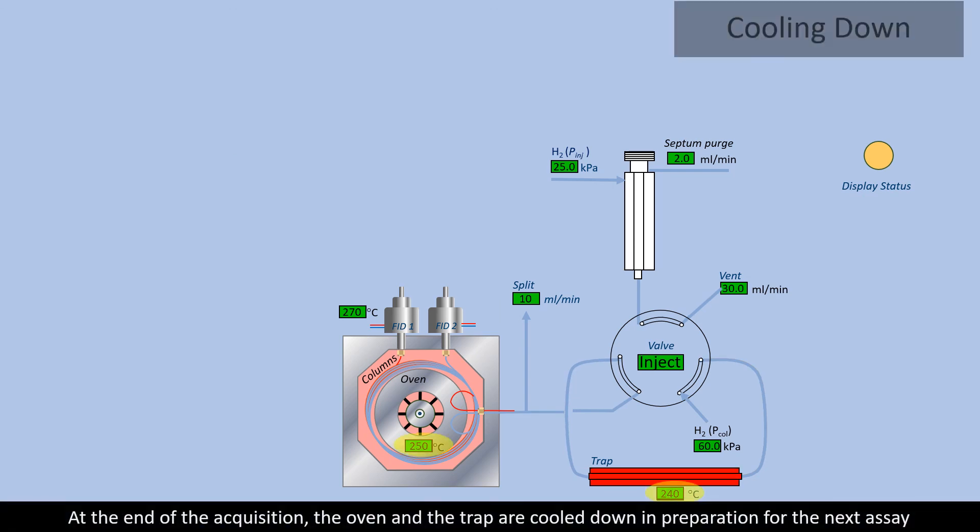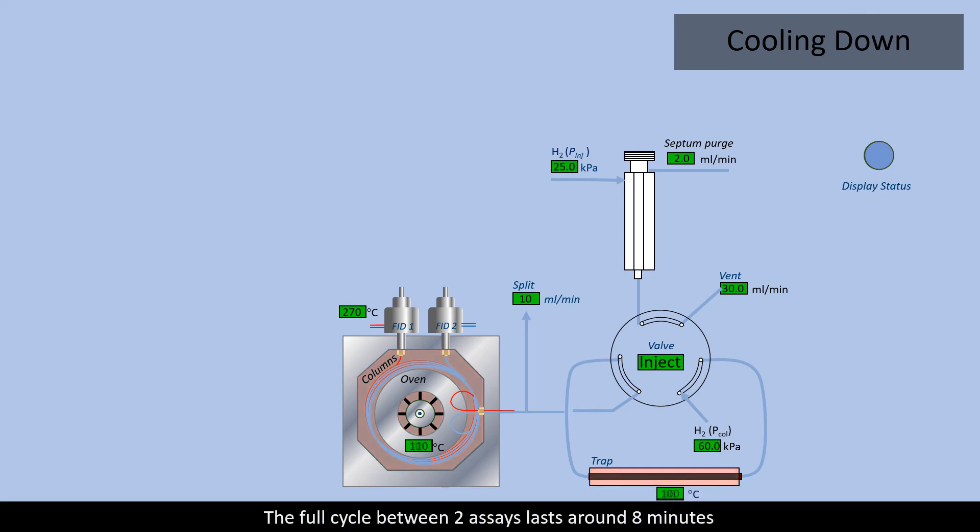At the end of the acquisition, the oven and the trap are cooled down in preparation for the next assay. The full cycle between two assays lasts around 8 minutes.